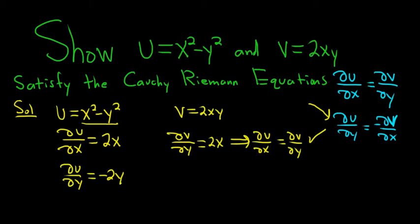And now we have to compute negative del v del x. So del v del x, in this case all of the y's are constants. So the derivative of x is 1, so we just get 2y.